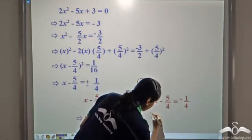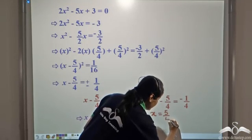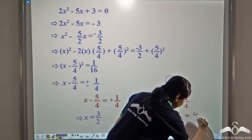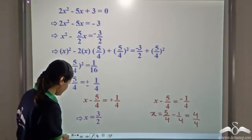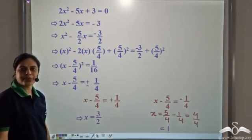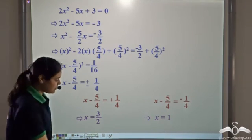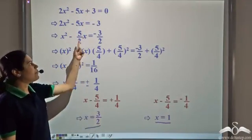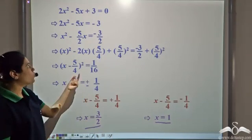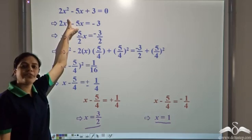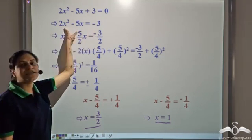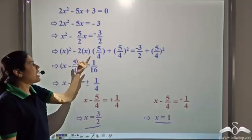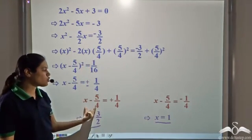From the second equation, x minus 5 by 4 equal to negative 1 by 4, we have x equal to 5 by 4 minus 1 by 4. 5 minus 1 is 4, so we have 4 by 4, which simplifies to x equal to 1. So x equal to 3 by 2 and x equal to 1 are the solutions. Note that the x squared term was not a perfect square to start with, but we divided the entire equation by the coefficient of x squared, which is 2, to make it 1, and then used completing the square.